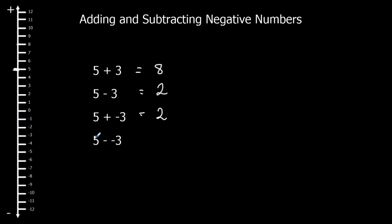And 5 minus minus 3 — so we're going to go down, but we're going to go down minus 3 spaces. So down minus 3 means up 3: 1, 2, 3 — and that's 8.